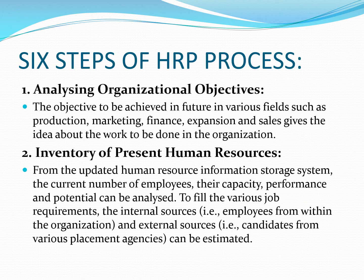Looking at the six steps of HRP process in detail: First, analyzing organizational objectives. Our organization has various departments — Production, Marketing, Finance, Expansion, Sales. We need to know the objectives of each department. Based on those objectives, we perform the HRP planning process.